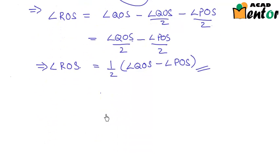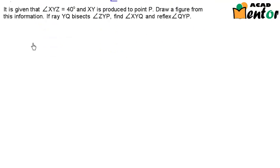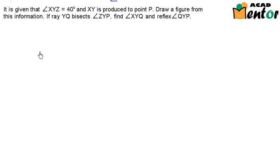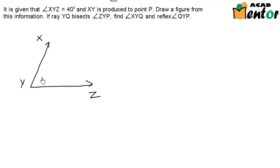Let's look at another example. The question says it is given that angle XYZ equals 40 degrees and XY is produced to a point P. First, we are supposed to draw a figure from this. Then it says: if a ray YQ bisects angle ZYP, find angle XYQ and reflex angle QYP. This sounds difficult, but let's start drawing the figure. Let's draw angle XYZ — label this X, Y, Z — and it is given as approximately 40 degrees.